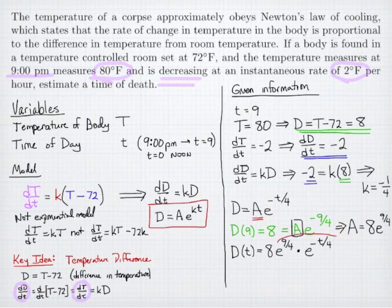If I combine my coefficients using the rules of exponents, I can actually rewrite this as 8 times e to the 9 minus t all over 4.